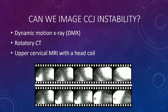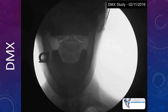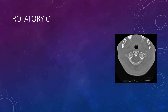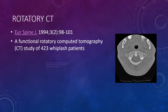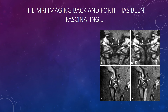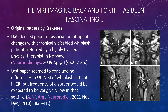Can we manage CCJ instability? Yes, but first we've got to be able to image it and make the diagnosis. That's through dynamic motion x-ray (DMX), rotatory CT, and upper cervical MRI. A DMX is a moving type x-ray that lets us see if these bones are aligned as you move — mostly the C1-C2 bone. Rotatory CT is a CAT scan where you turn your head. MRI imaging has been interesting: original studies seemed to show it was a good way to look for injured alar or transverse ligaments, and the well-done early research really seems to support that MRI probably has a role in looking for these damaged ligaments.